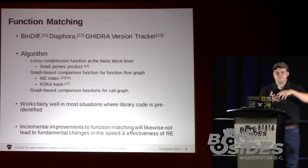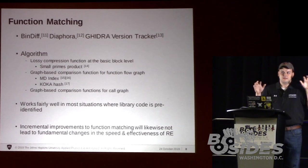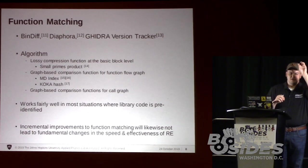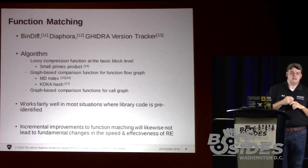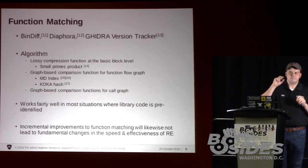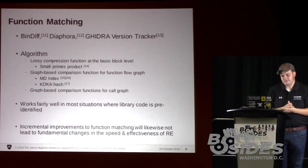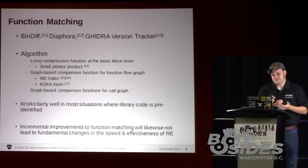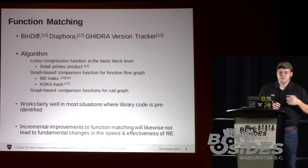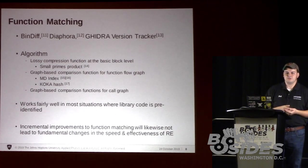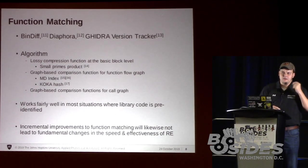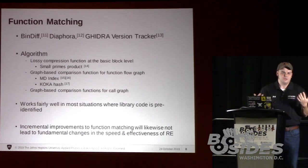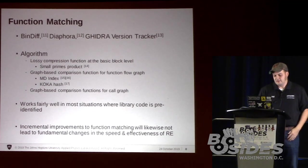They'll also go back out one level up to the function-to-function call graph and compare the two that way. The point is they work pretty well, and we should keep working on decompiler research and function matching research, but incremental improvements there aren't going to make a fundamental breakthrough in the speed of reverse engineering. That's my argument.